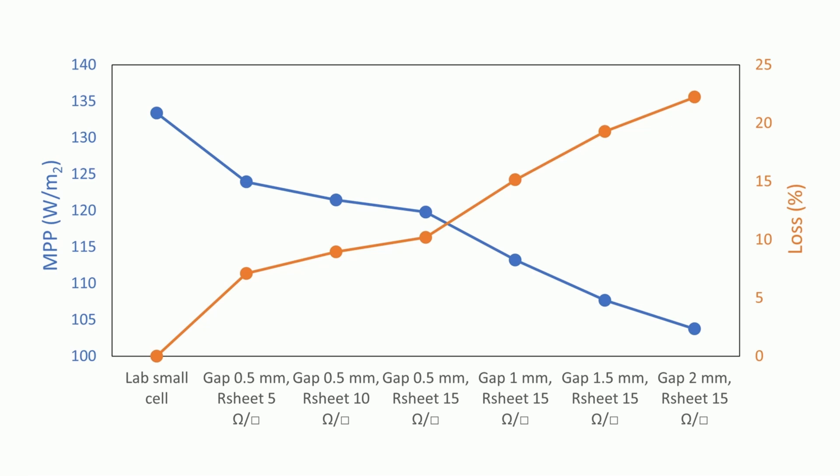It tells us that decreasing the dead area in a module with a high sheet resistance is a more effective approach than simply lowering the sheet resistance in a module with a smaller dead area. This suggests we need to consider multiple factors in optimizing solar cell performance.